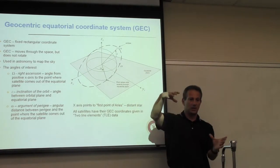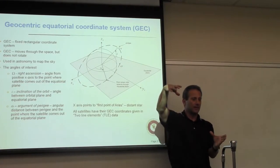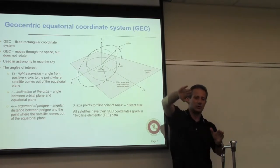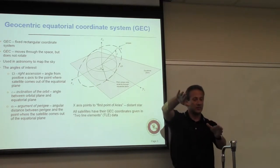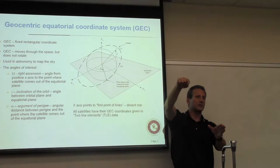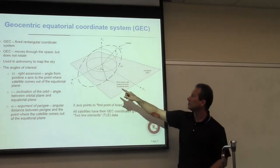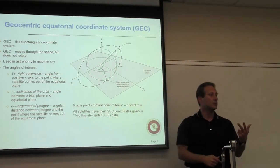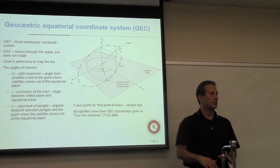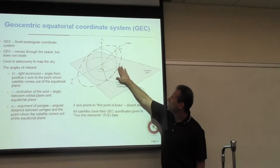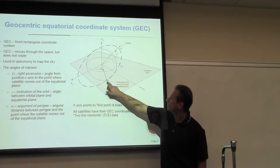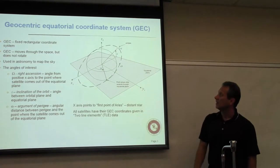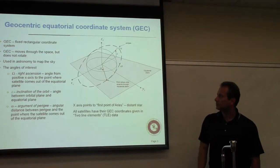The third parameter specifies where the perigee is once you've chosen the orbital plane. You need to give the angle between the ascending node and the perigee — that's the argument of perigee. So the three parameters used to specify the orbit relative to the geocentric coordinate system are: inclination, right ascension of the ascending node, and argument of perigee.